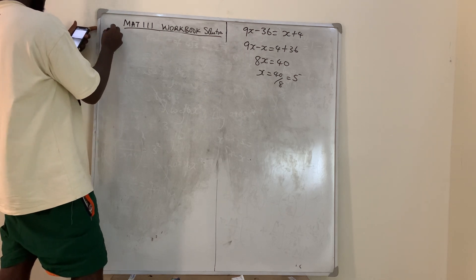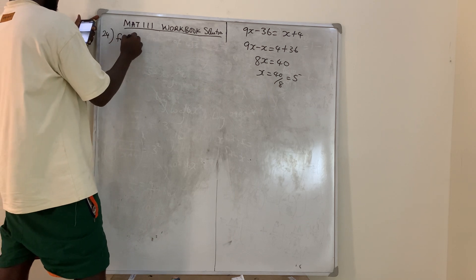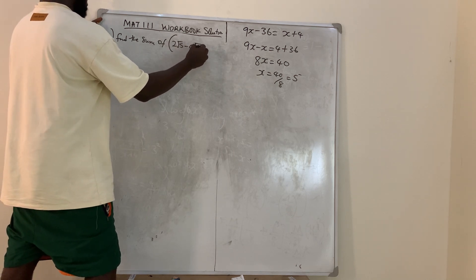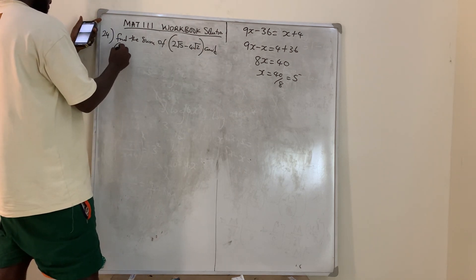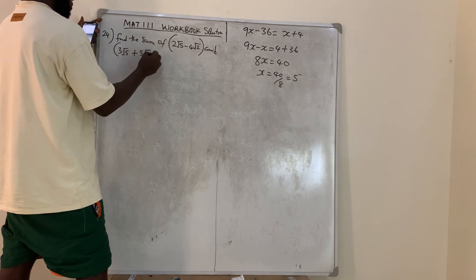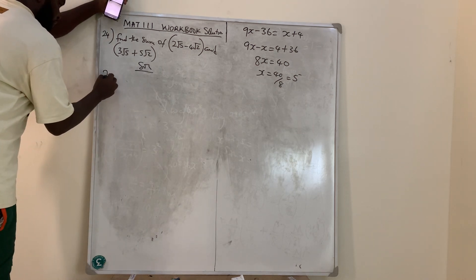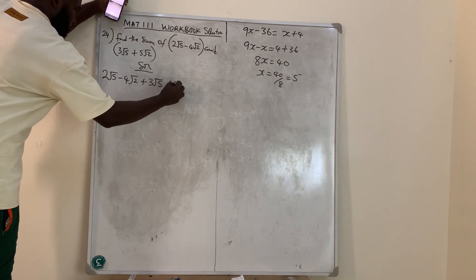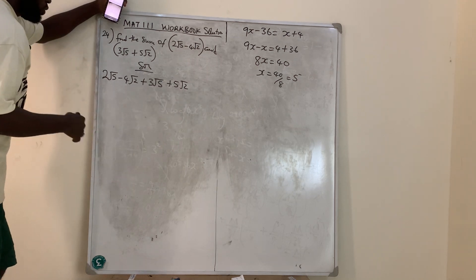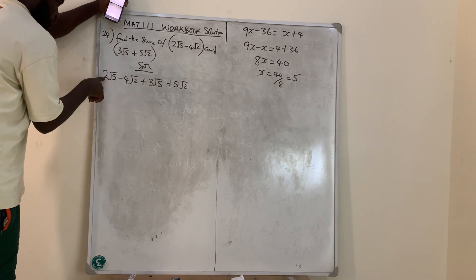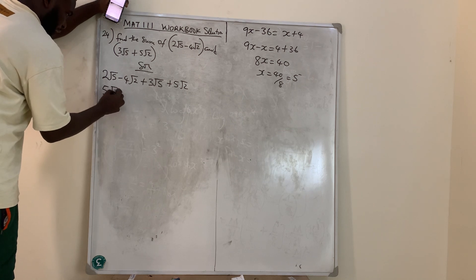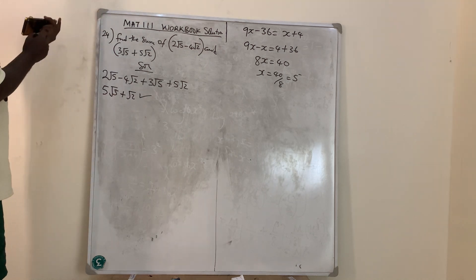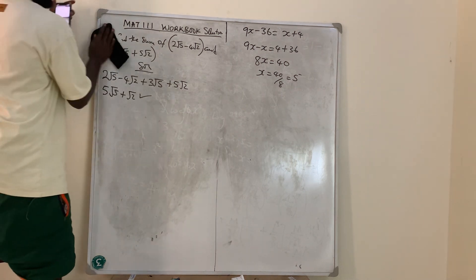Question number 24 says: find the sum of (2√5 − 4√2) and (3√5 + 5√2). Sum means add, so we have 2√5 − 4√2 + 3√5 + 5√2. Collecting like surds: 2√5 + 3√5 = 5√5, and −4√2 + 5√2 = +√2. The answer is 5√5 + √2.